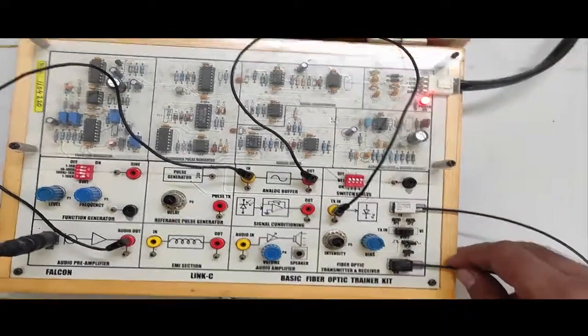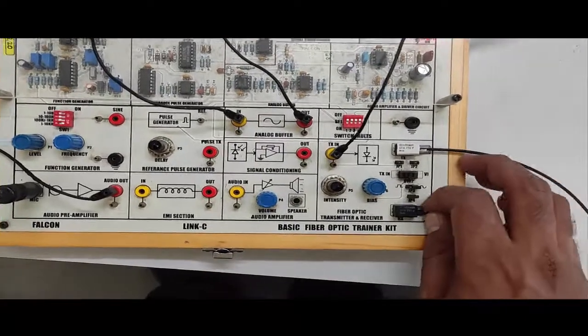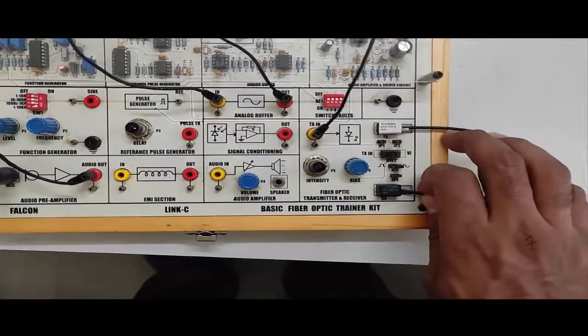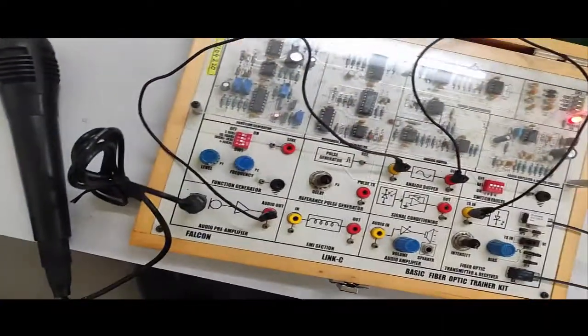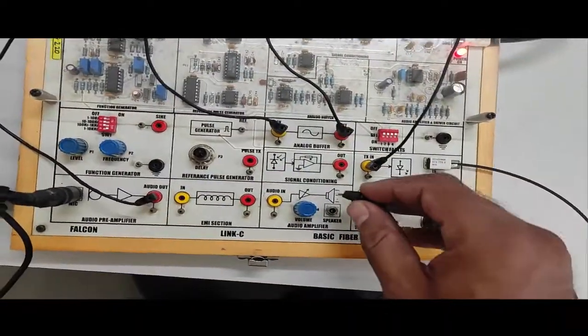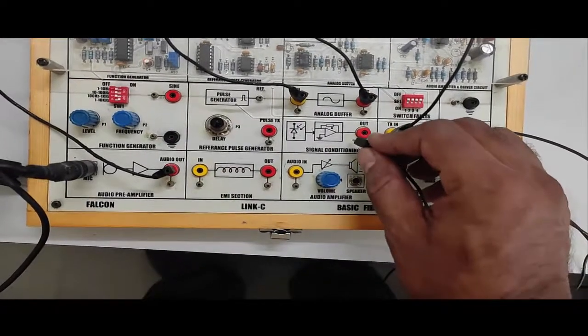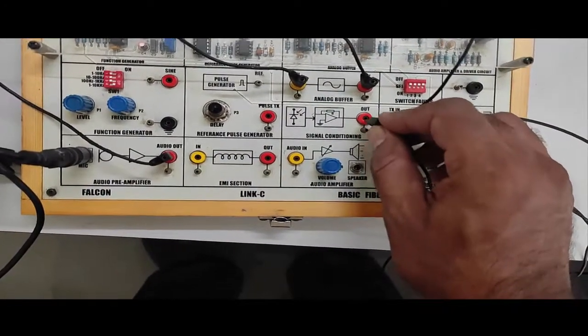You can see that the light is coming out from the optical fiber and I am connecting the other end of the optical fiber to the photo detector. The photo detector will convert this light into electrical signal and it can be given to the signal reconditioning.